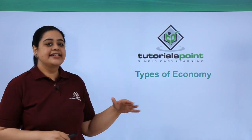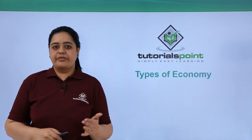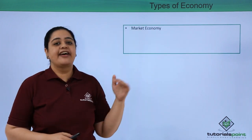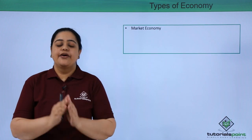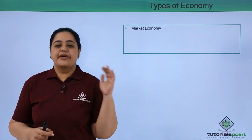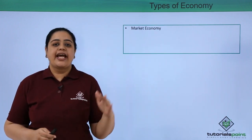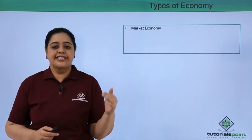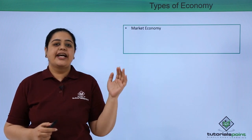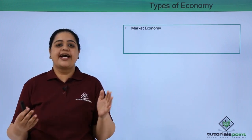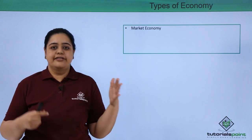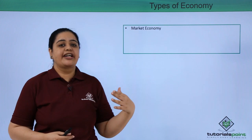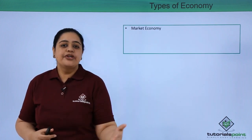Let us now understand the types of economy. We have different types of economy. For example, we have the market economy, where basically all the resources would be privately owned and the motive here would be to generate profit, that is profit maximization, utilizing the resources in such a manner that the entire private owners can benefit from that.